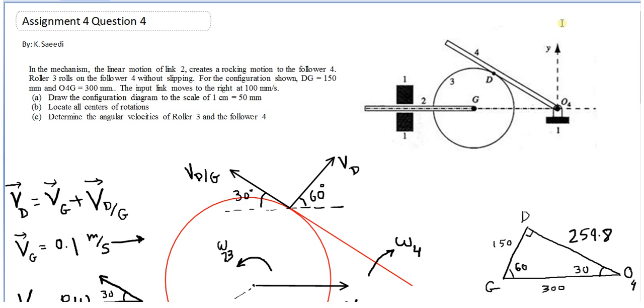I can draw this triangle: VG plus VDG which makes an angle of 30 degrees with the horizontal line equals VD. I know the direction of VD is perpendicular to member 4, so the angle is 60 degrees.